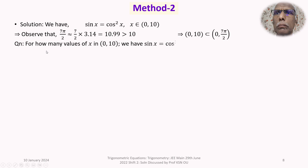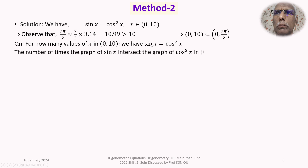In Method 2, we ask: for how many values of x in (0, 10) does sin x = cos²x? The answer is the number of times the graph of sin x intersects the graph of cos²x in the interval (0, 10).